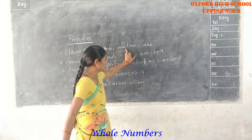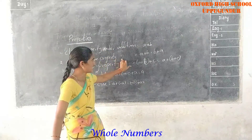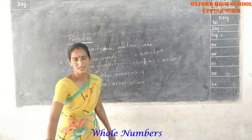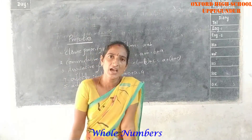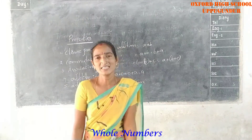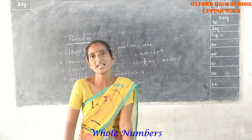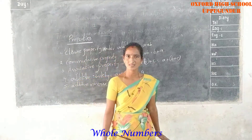Today we learned about closure property under subtraction and commutative property under subtraction. We took examples and wrote them. Today's lesson is complete — thank you.